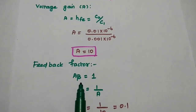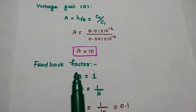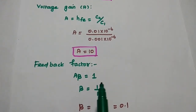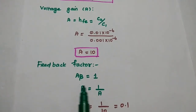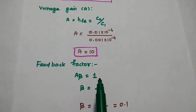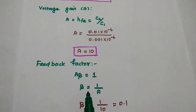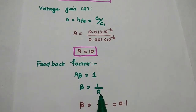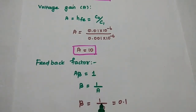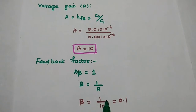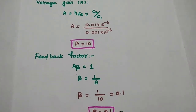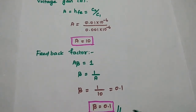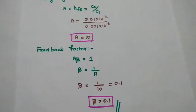Then we have to find out the feedback factor. A·β is equal to 1 for any oscillator. So A·β = 1, which gives β = 1/A. Substituting the value of A, we get 1/10 = 0.1. So β is equal to 0.1.